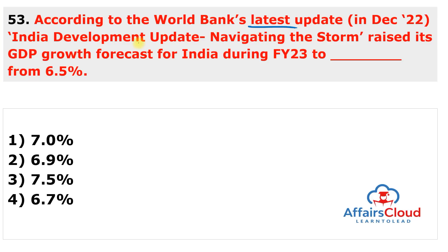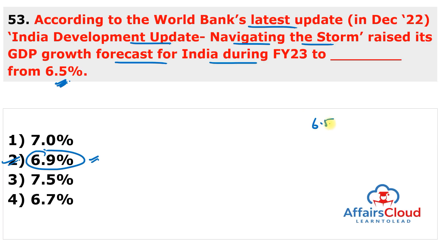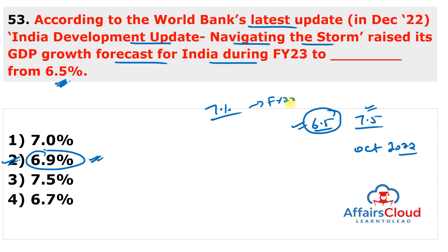Question 53: According to the World Bank's latest 'India Development Update: Navigating the Storm', India's GDP forecast for FY23 was raised to 6.9% from 6.5%. Earlier, the World Bank had declined India's FY23 forecast from 7.5% to 6.5% amid the Russia-Ukraine war, rising global interest rates, and high inflation in October 2022. Now it has been revised upward to 6.9%. Additionally, Fitch Ratings retained India's growth forecast at 7% for FY23 in its December 2022 Global Economic Outlook.